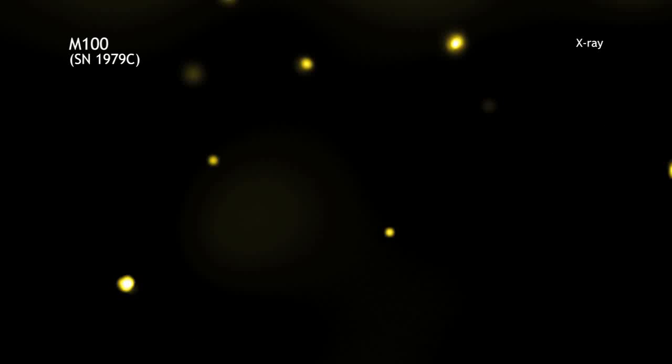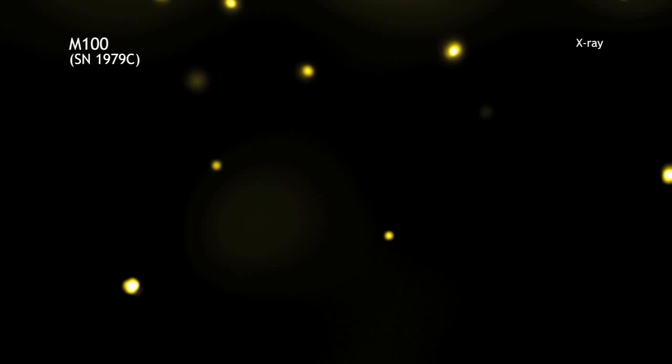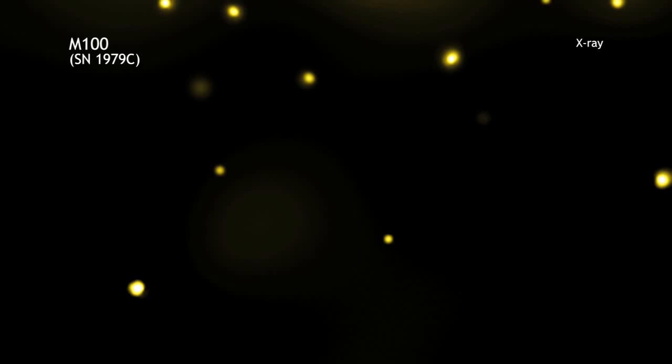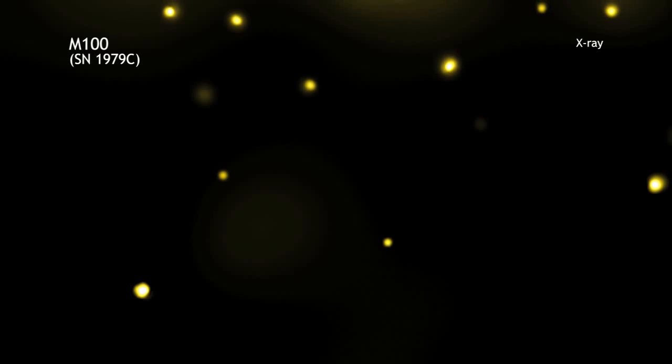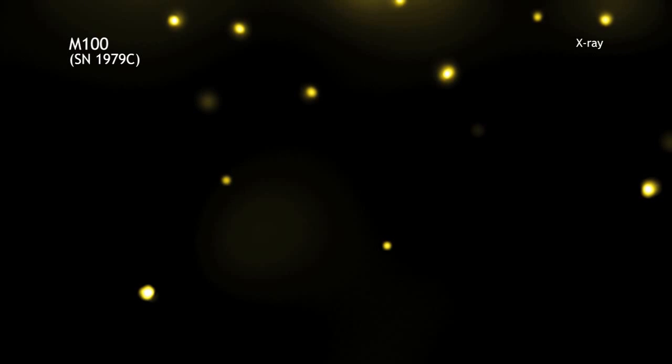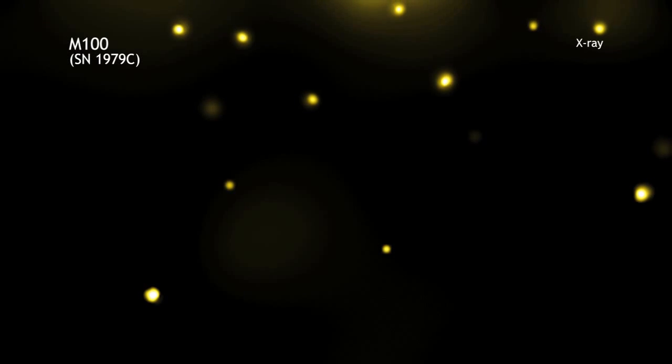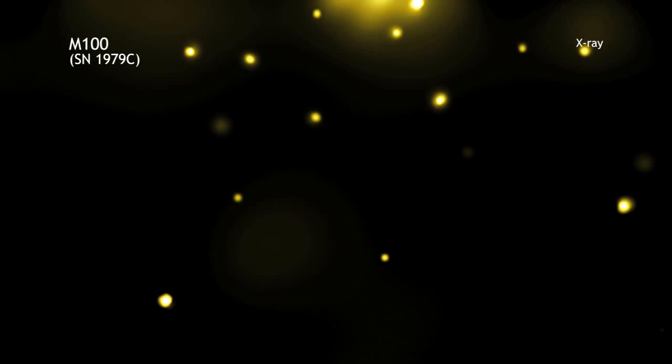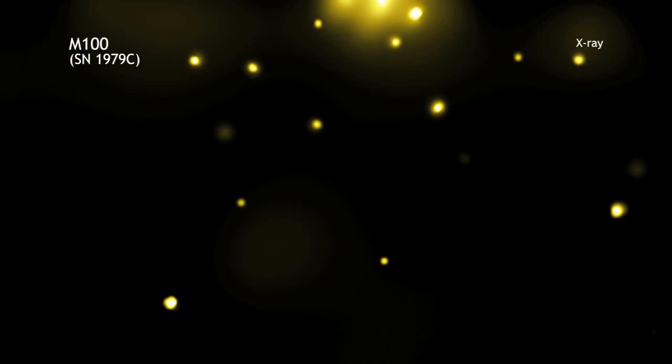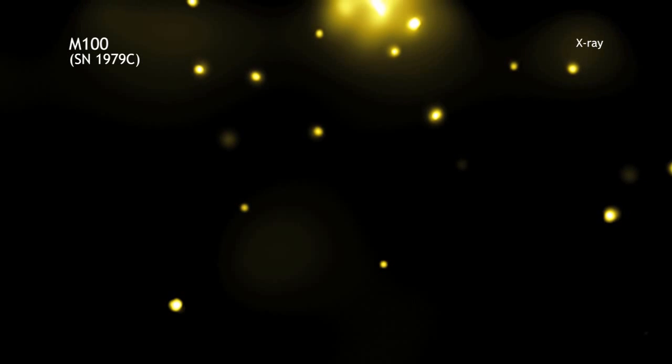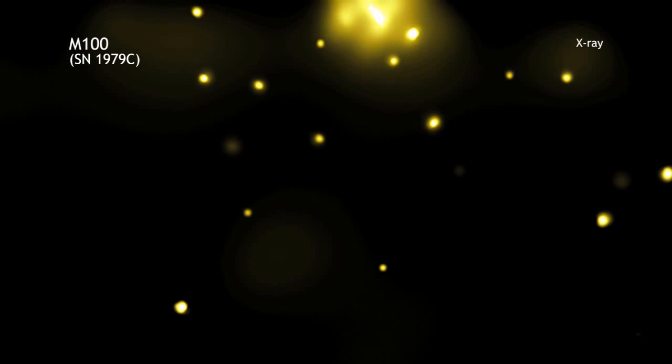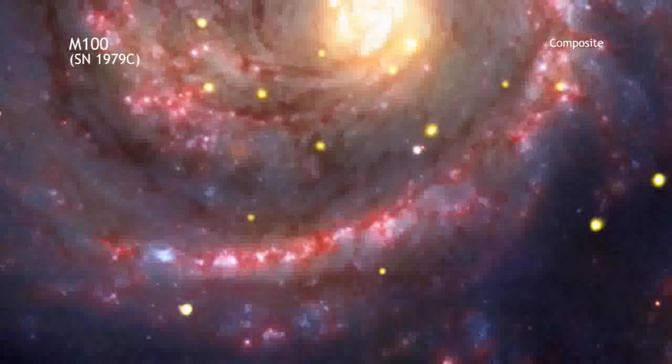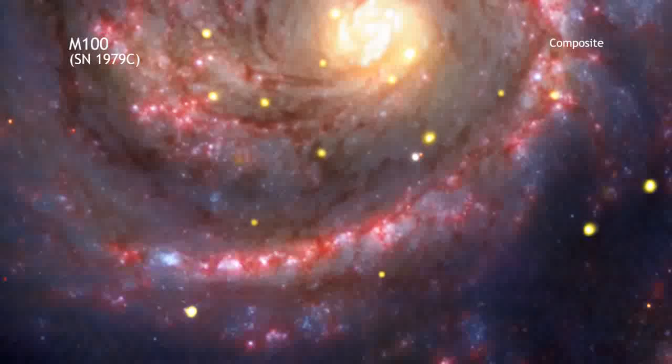Well interestingly enough this particular supernova is only one of three at the time which was observed when it was going off. It was discovered in 1979 by a school teacher Gus Johnson who lived in Maryland and he was observing M100 which is something he liked to do and what he noticed was that there was this bright star, this new bright star in the field and it turned out that this was supernova 1979C.